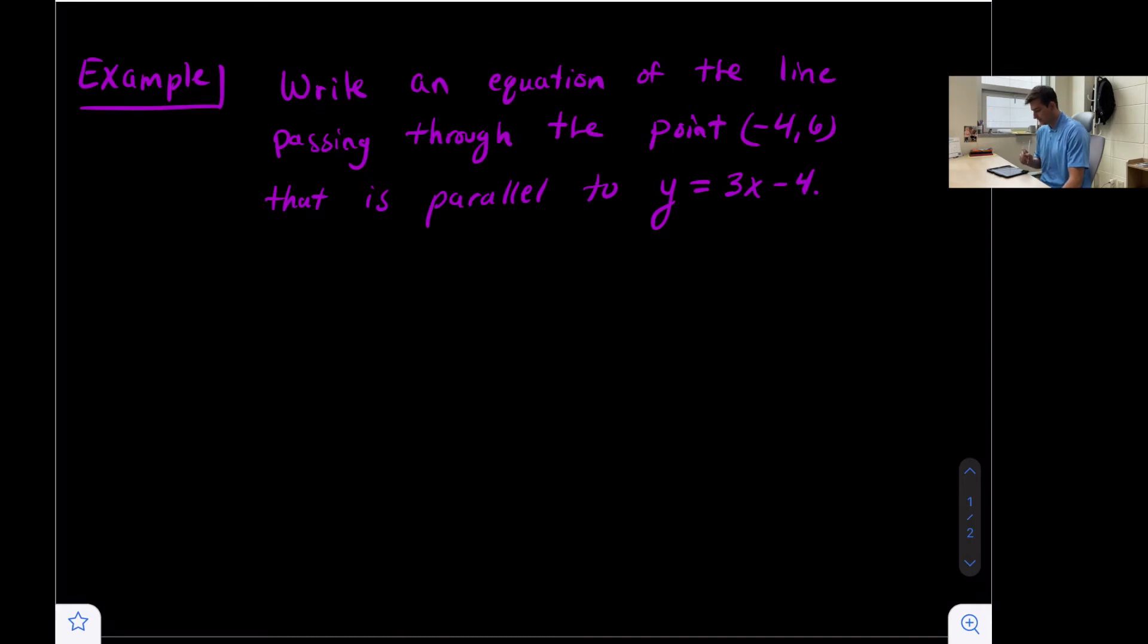We need to understand slope-intercept form: y = mx + b, where m is our slope. The equation y = 3x - 4 is already written in slope-intercept form, so we know that the slope is 3.